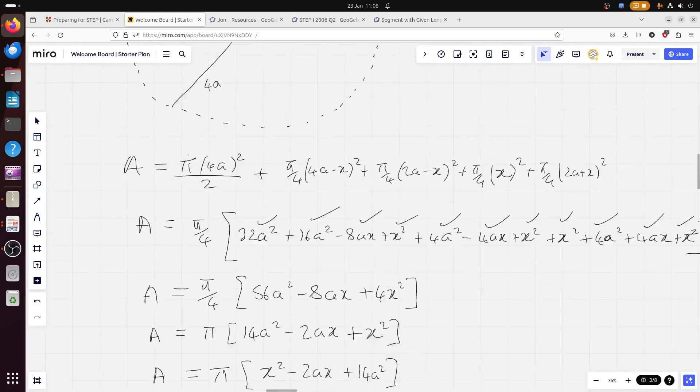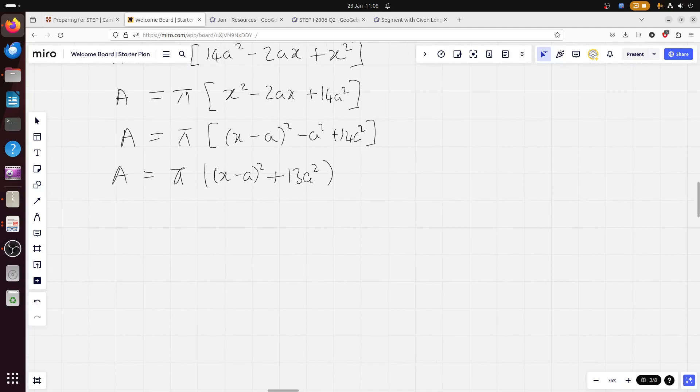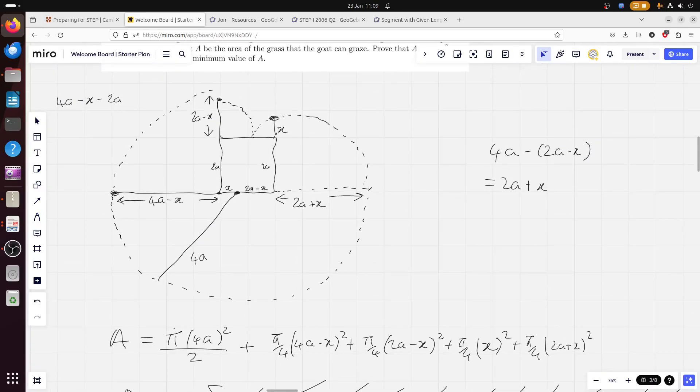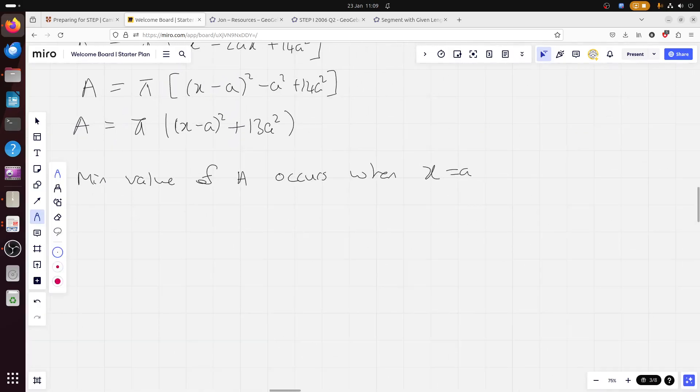Right. Firstly, if I do the last question first, if I find the minimum value of the area, well, the minimum value of the area is going to occur when this bracket equals zero, giving you 13 pi a squared. So, you can see from this, the minimum value of A occurs when x equals a. Note that if you interpret that in a diagram, it makes a lot of sense. So, put it right in the middle, and the goat won't get so much grass to graze on. And so, area equals, at this point, that goes to zero, 13 pi a squared.